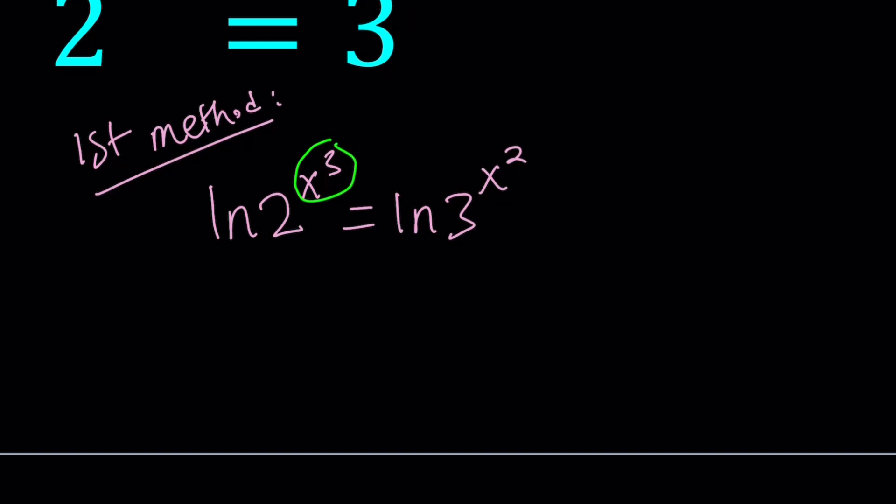This allows us to move these exponents. We can go ahead and put them in the front. They just become coefficients. So this gives us x cubed times ln 2 equals x squared times ln 3.